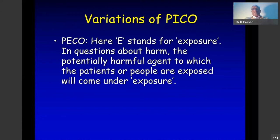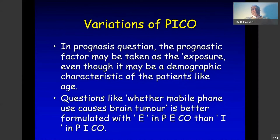In diagnostic studies, I becomes Index Test — you compare with a gold standard, and the outcome is sensitivity, specificity, and so on. In prognosis questions, the prognostic factor is like an exposure. In my evidence-based medicine book I called it an Indicator variable — indicating the prognosis of the patient. P is for patient population, I is indicator variable, C is comparison with indicator variable absent, and O is the outcome.